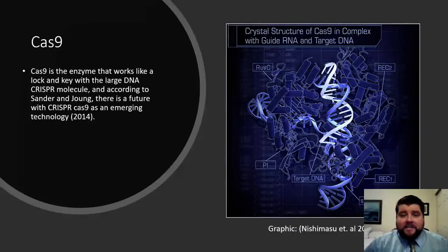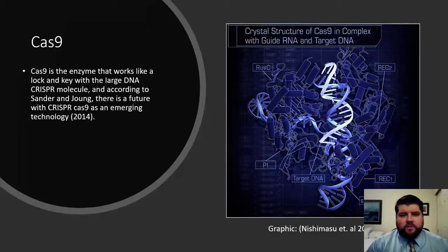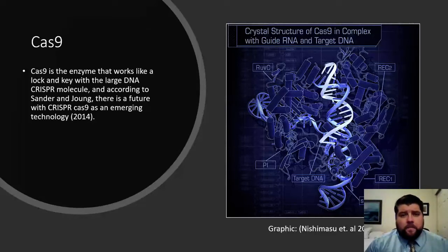What is Cas9? Cas9 is the enzyme that works with the CRISPR system using guide RNA to target certain aspects of DNA on a very small level and to cut the DNA at that location. This has huge implications in biotechnology, and it's an emerging technology as of 2014. Now five years later, CRISPR is going to be here, and it's going to be here for a while.